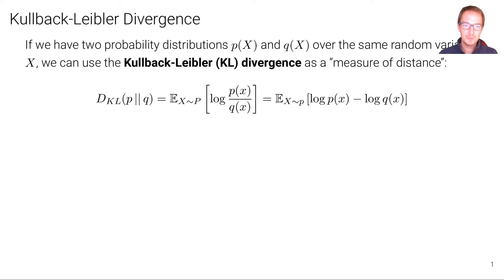Suppose we have two probability distributions, p and q, over the same random variable X. We can use the Kullback-Leibler divergence, which is also in short called KL divergence, as a measure of distance. And I put the quotes here because it's not a real distance metric, as we'll see.